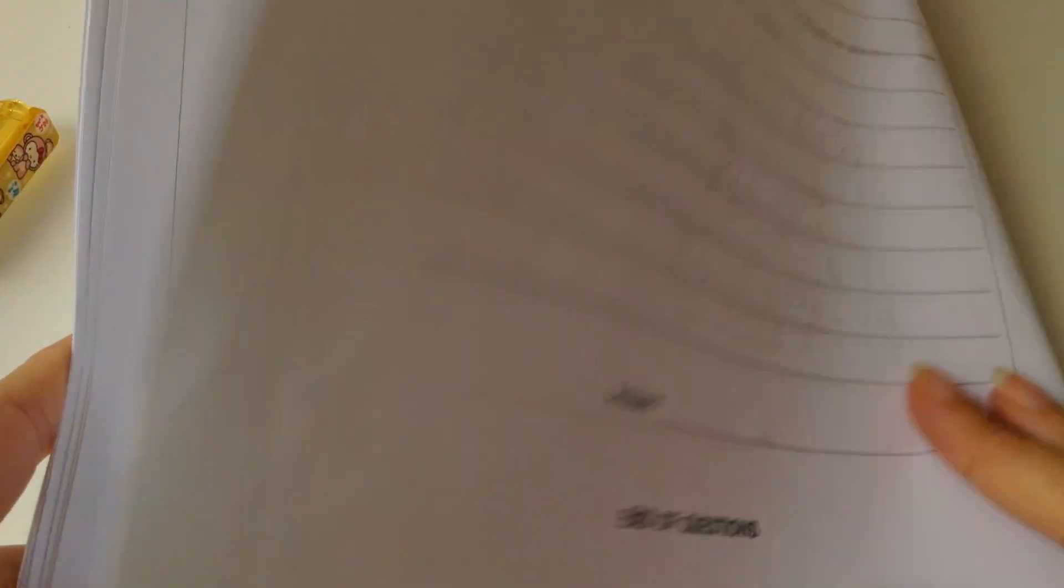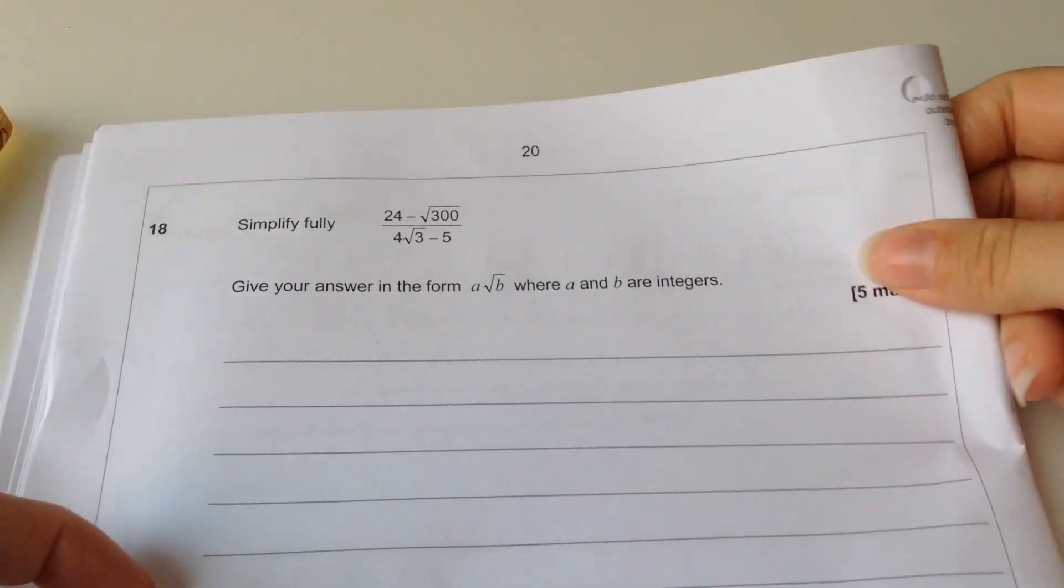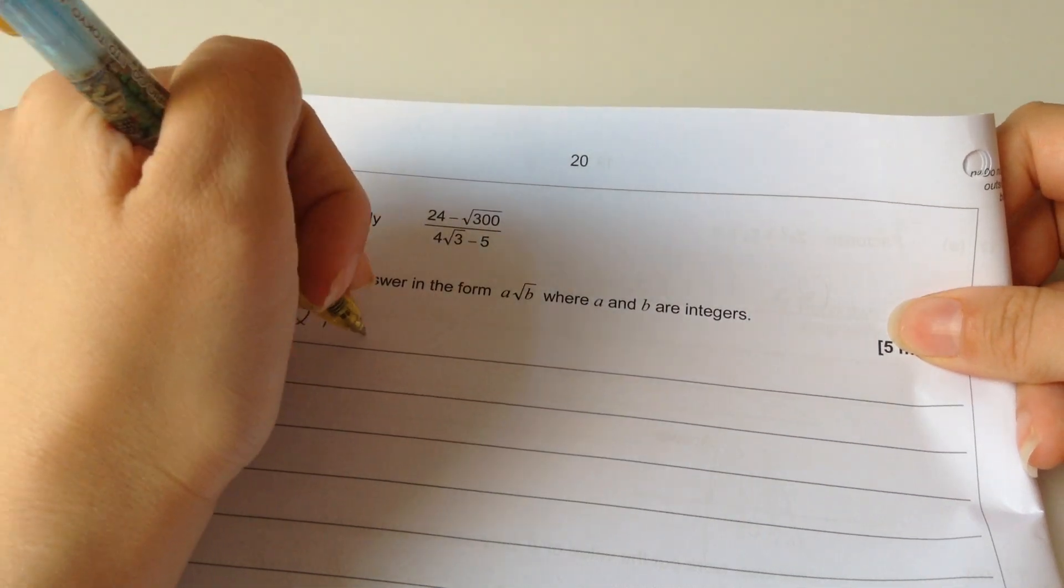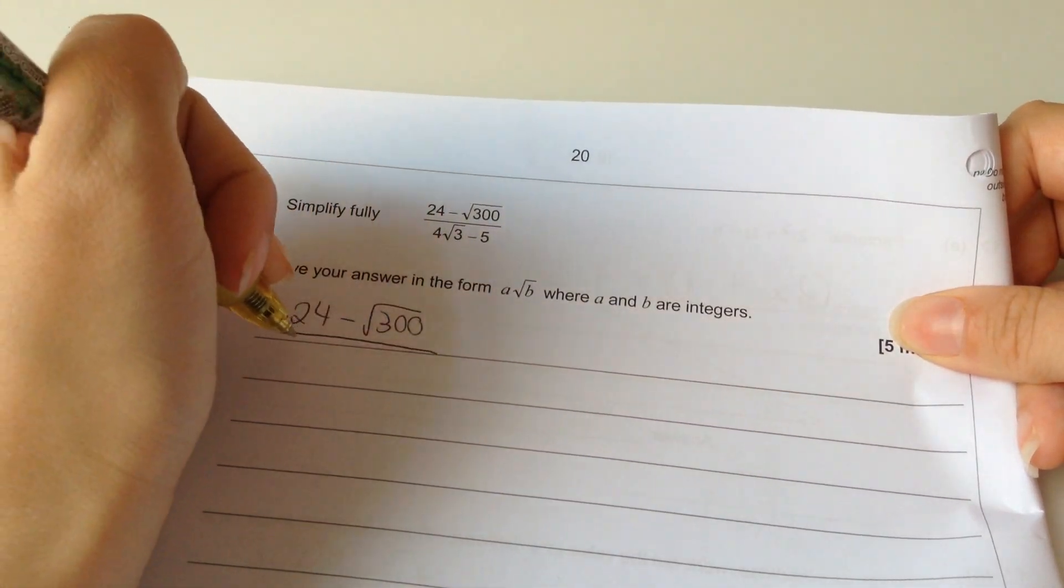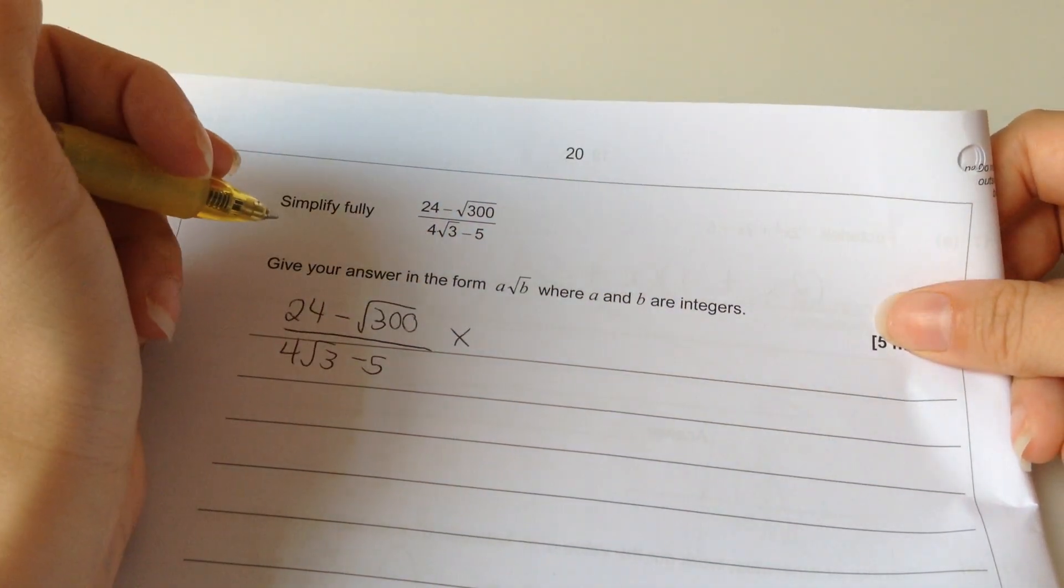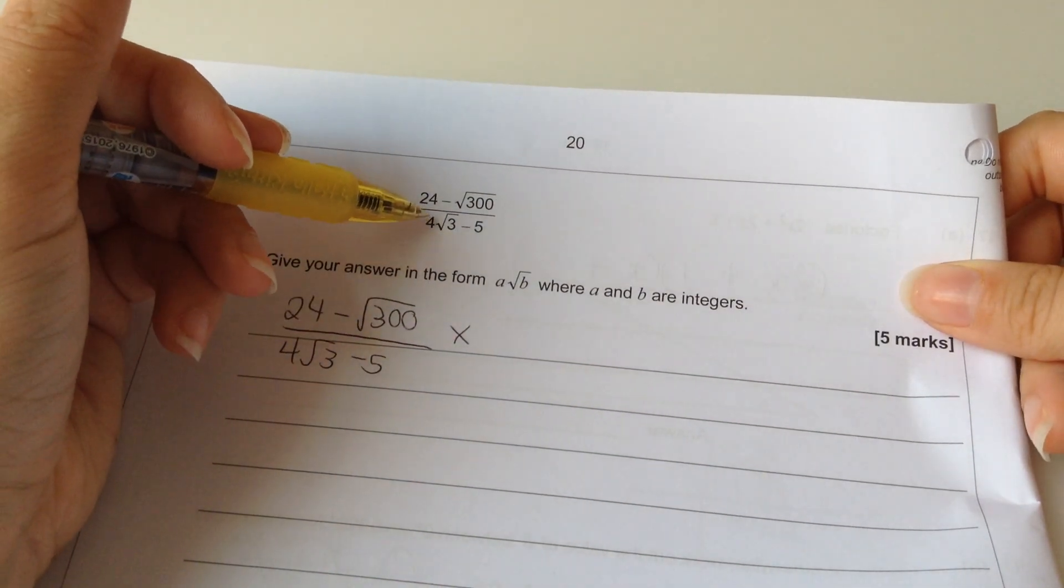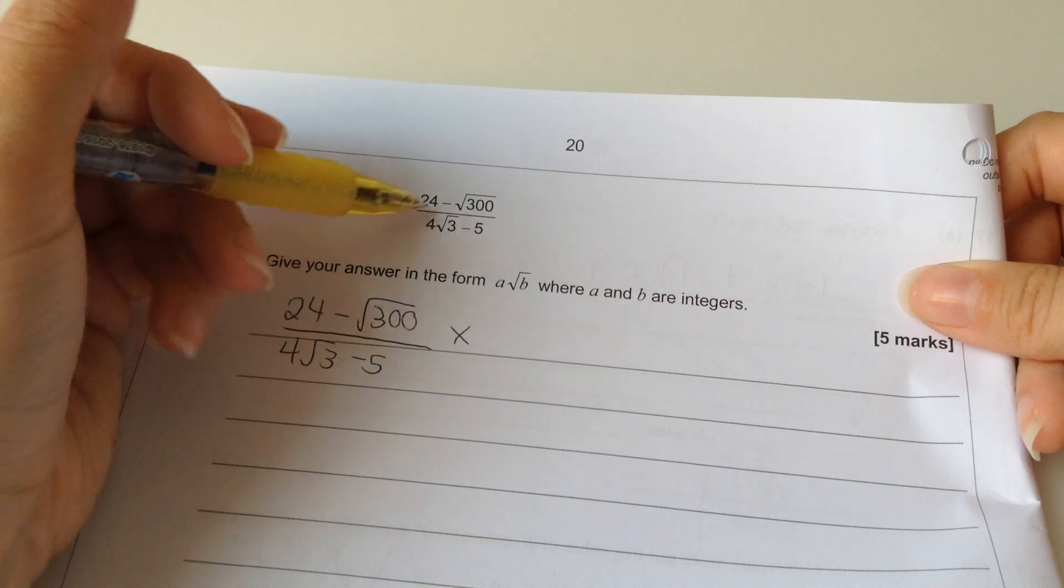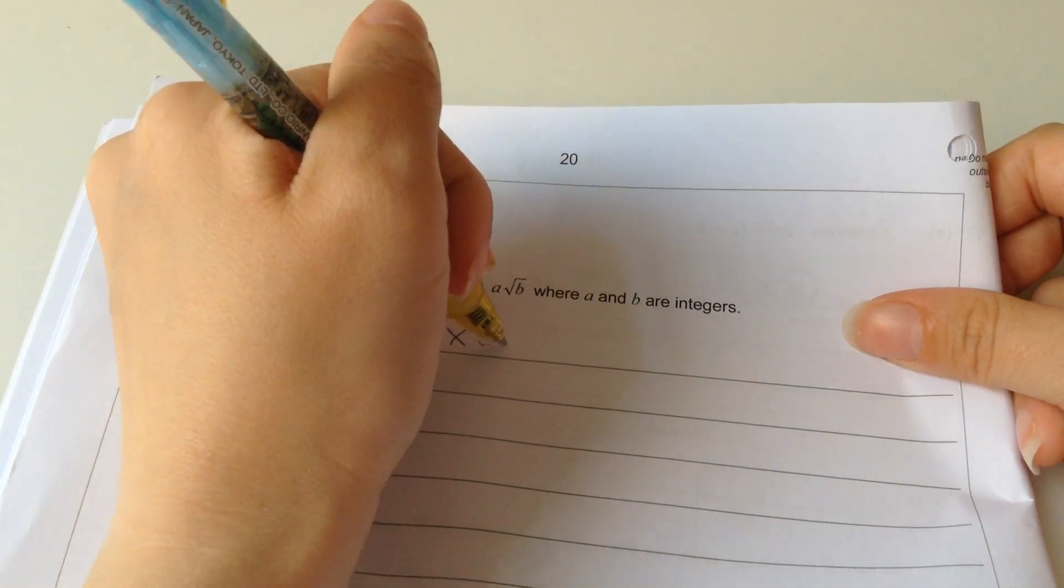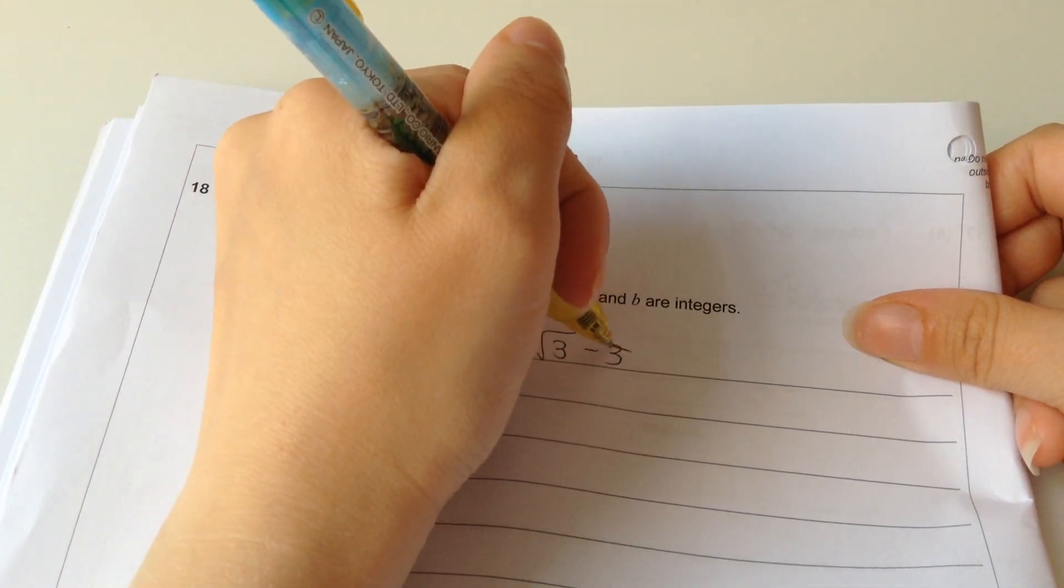Last question. Simplify this fully. Okay. I need to rationalize. So, I'm going to times by the conjugate. And I learnt yesterday that you don't have to negate the 3rd bit. You can negate the 5 bit instead. It doesn't make a difference. And I didn't even know that. But, you know what? This is how I've always done it, so this is how I'm going to do it. Oops. That's a 5.